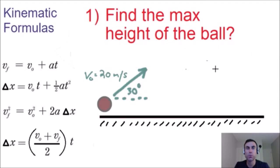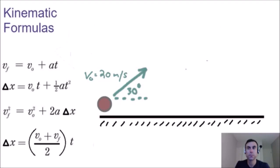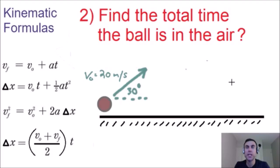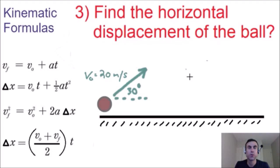Question number one: given this information, we need to find the max height of the ball. Question number two: we need to find the total time the ball is in the air. Question number three: we're going to find the horizontal displacement of the ball. Let's get started with question number one.